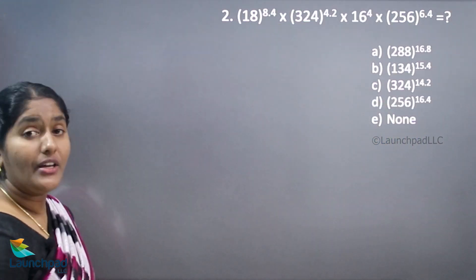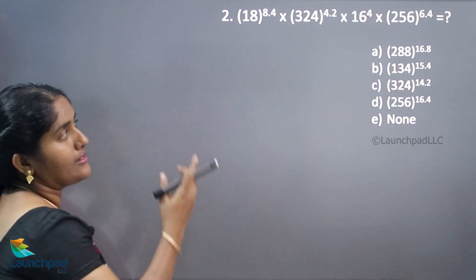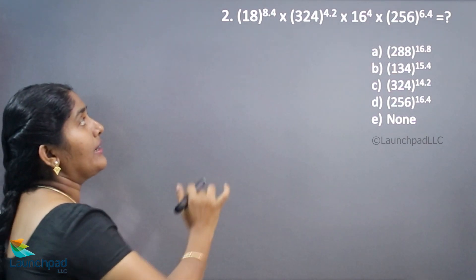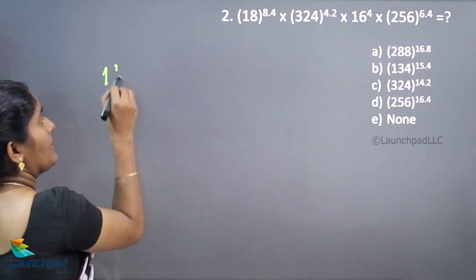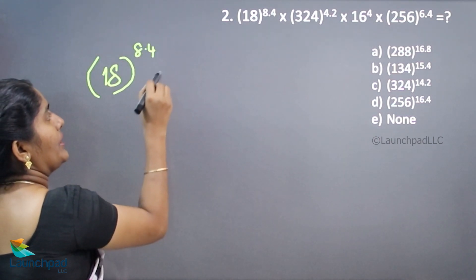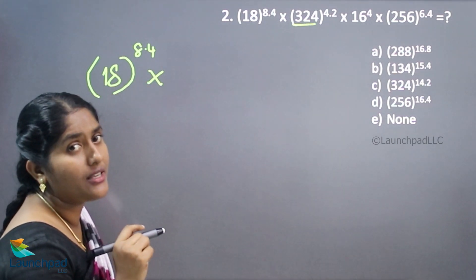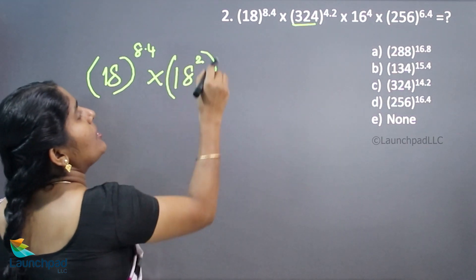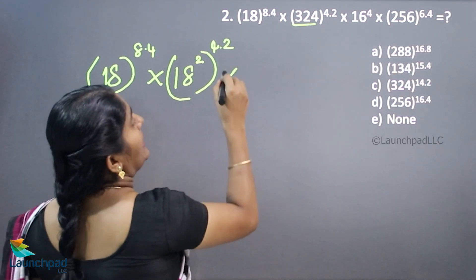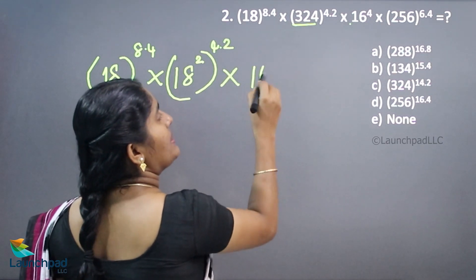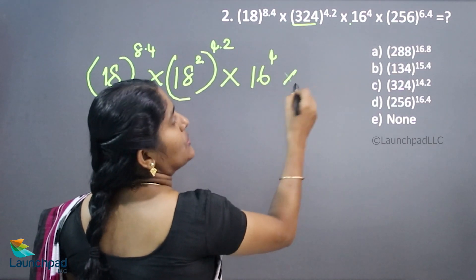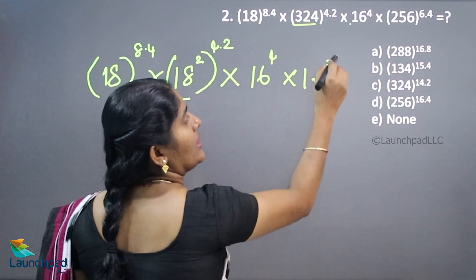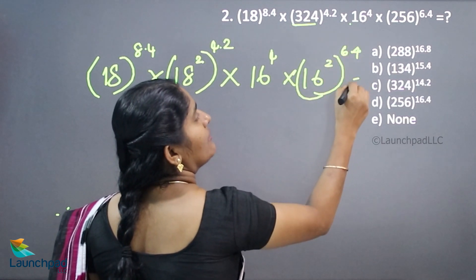This is another rule. The next question has 256, 16, 324, and 18. Observe the question first. Here 18 to the power of 8.4, into 324 — 324 is 18 squared — the whole power 4.2. Into 16 to the power of 4, and 256 — 256 is 16 squared — the whole power 6.4, equal to what?